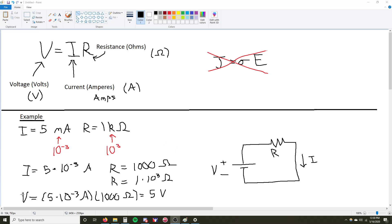Now, we go down to where we plug in our variables, just plug and chug. V equals I times R, V equals 5 times 10 to the negative 3 amps, times 1,000 ohms, or 1 times 10 to the 3 ohms, equals 5 volts.